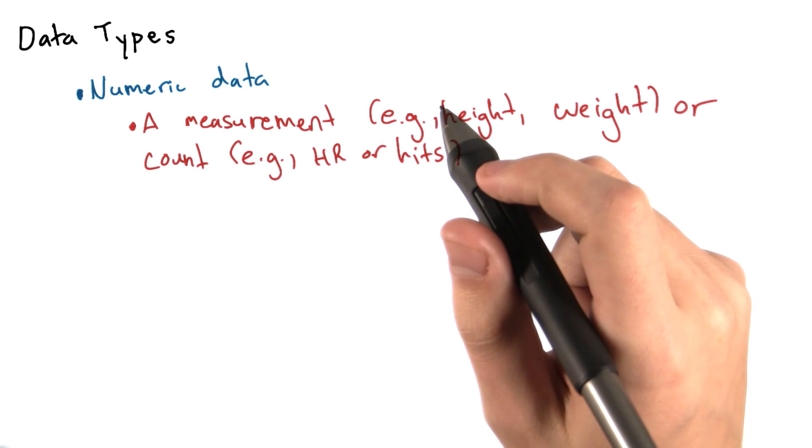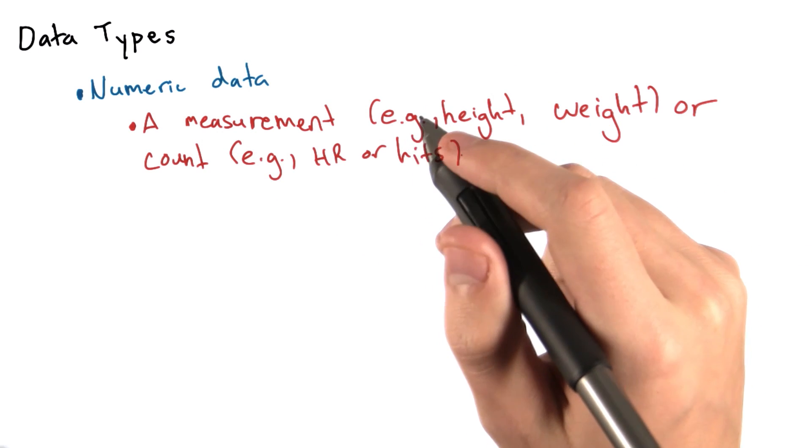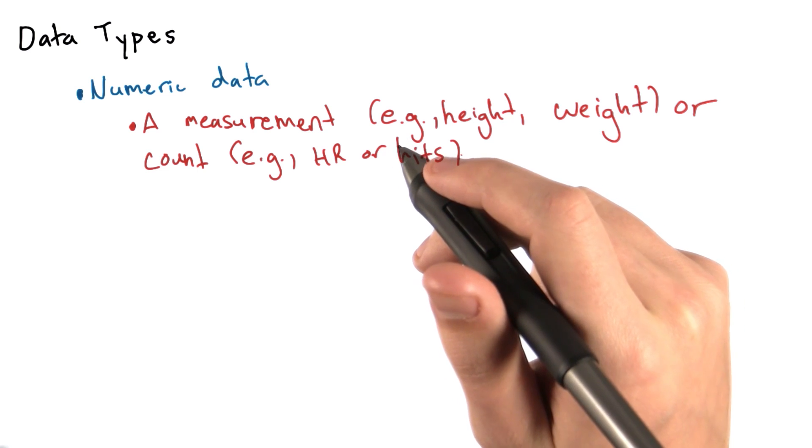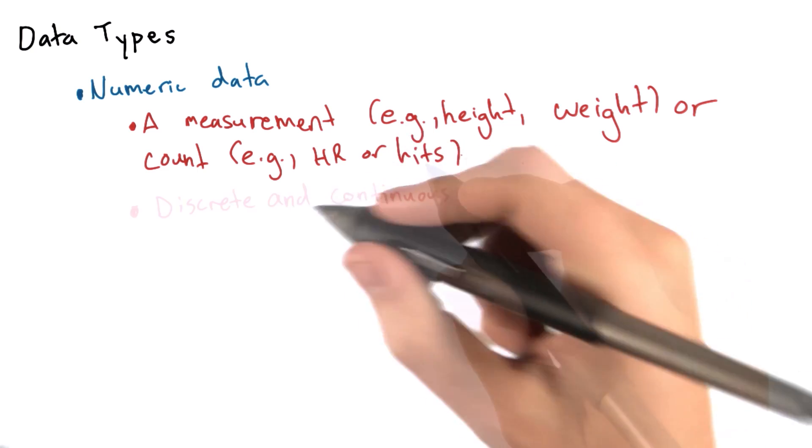Numerical data can be characterized into discrete or continuous data. Discrete data has distinct values, whereas continuous data can assume any value within a range.